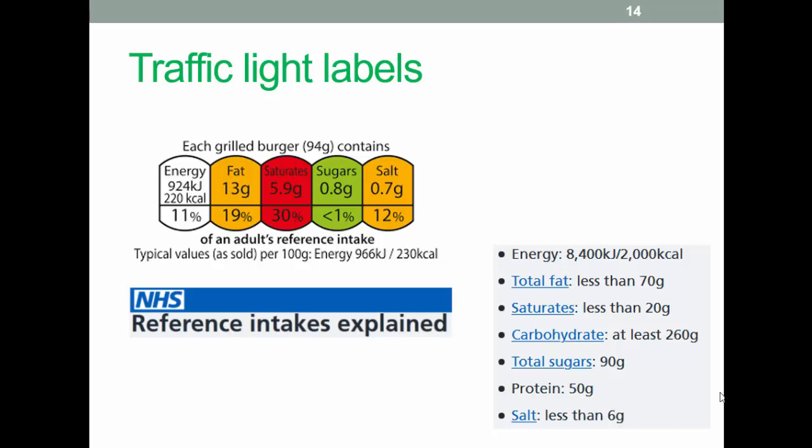The traffic light system was introduced in 2014, designed as a simple way of showing how much of the most important nutrients and energy a particular food contains. Green indicates a low amount relative to the reference intake for an adult. Red indicates a higher value, with orange in the middle. The reference daily intake is the maximum amount of energy or nutrients an average adult should consume per day — around 2,000 kilocalories for a woman and 2,500 for a man. Note that protein is not included in the traffic light label — why do you think this is?